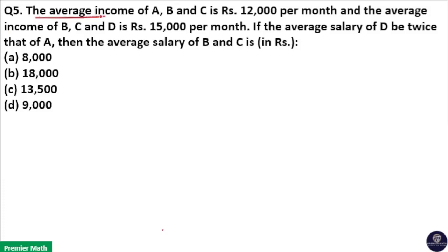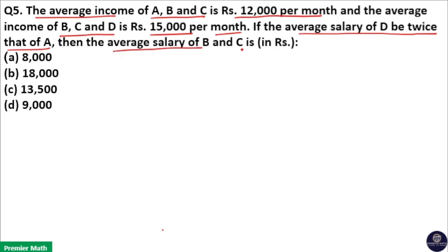The average income of A, B and C is 12,000 per month and average income of B, C and D is 15,000 per month. If the average salary of D is twice that of A, then what is the average salary of B and C?